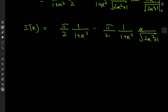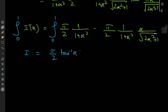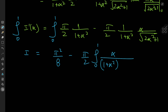We now recover I by integrating dI/dα with respect to α. Using a definite integral from 0 to 1, since I(1) is our target and I(0) = 0, the left-hand side by the fundamental theorem of calculus is just I. The first term gives π/2 times arctan(α) evaluated from 0 to 1, which is π/4, so π/2 · π/4 = π²/8. We still need to evaluate the integral from 0 to 1 of α / [(1+α²)·√(2α²+1)] dα.